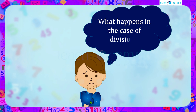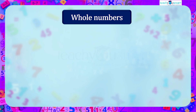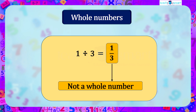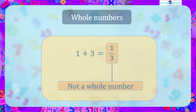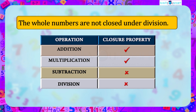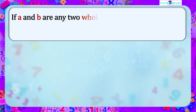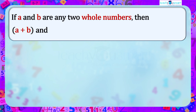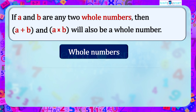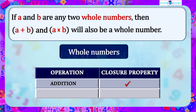What happens in the case of division? In general, if a and b are any two whole numbers, then a + b and a × b will also be a whole number. That is, whole numbers are closed under addition and multiplication.